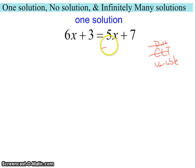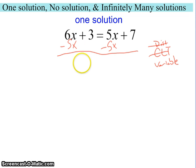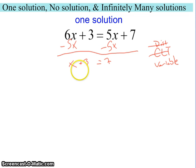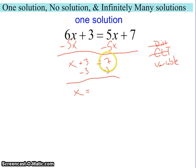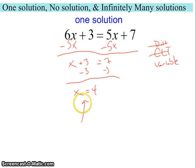So I do have to do that. I'm going to subtract 5x from both sides, because that will give me a positive result. 6 minus 5 is 1, so we have x plus 3 equals 7, and then we will get our constants to zero — 3 minus 3 is 0. So we have x equals 7 minus 3, which is 4.